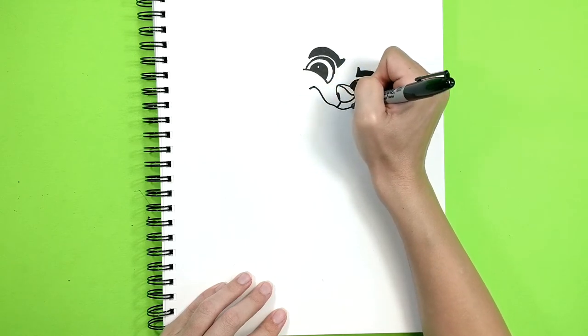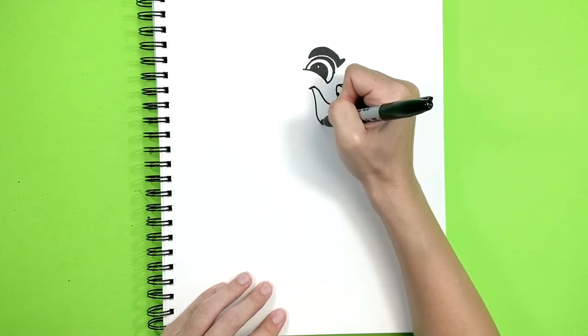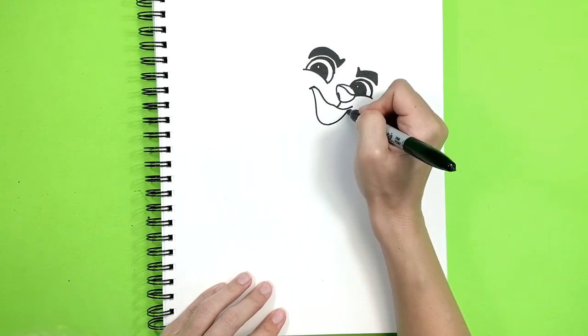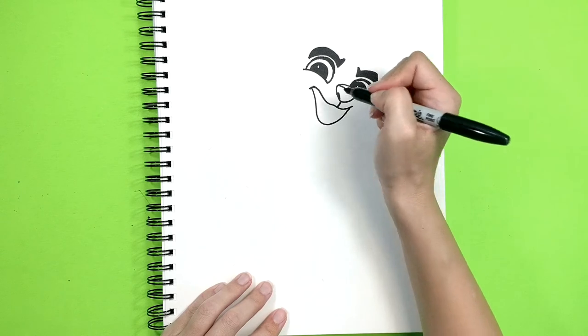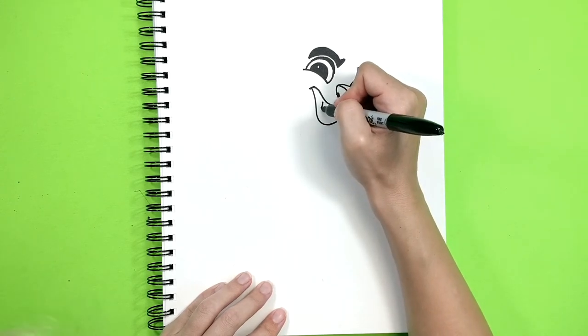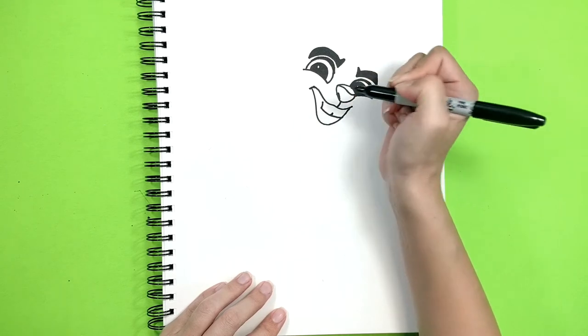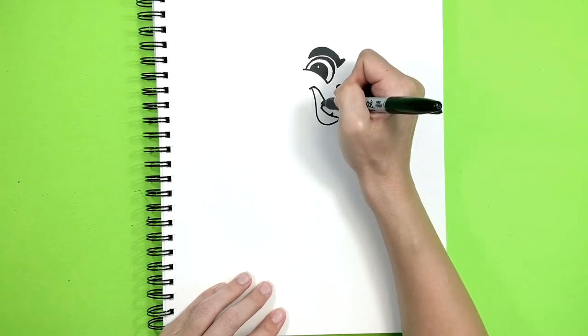Here we go, the bottom. And Bunga has these big teeth, this front teeth, and one little tooth right there.